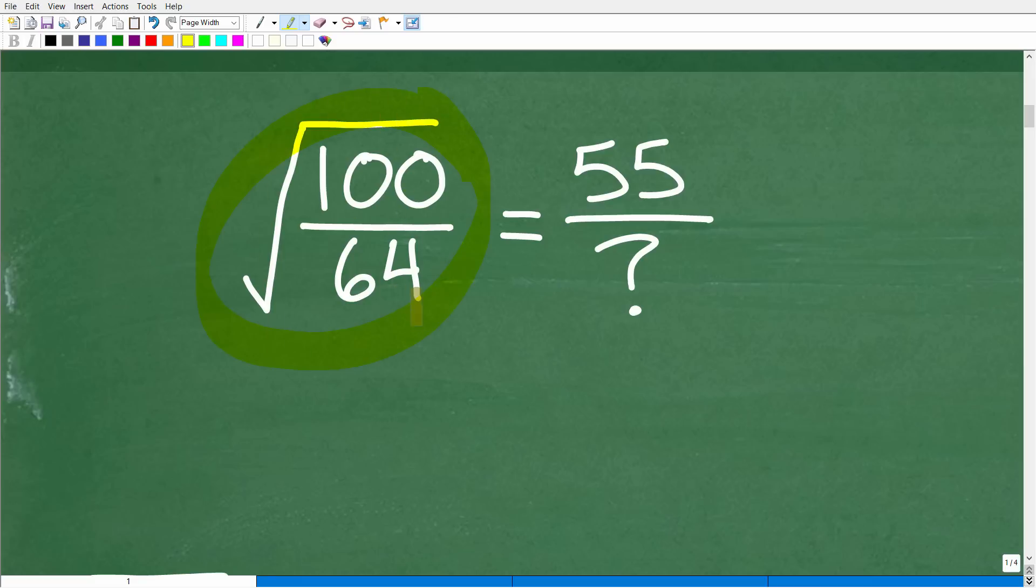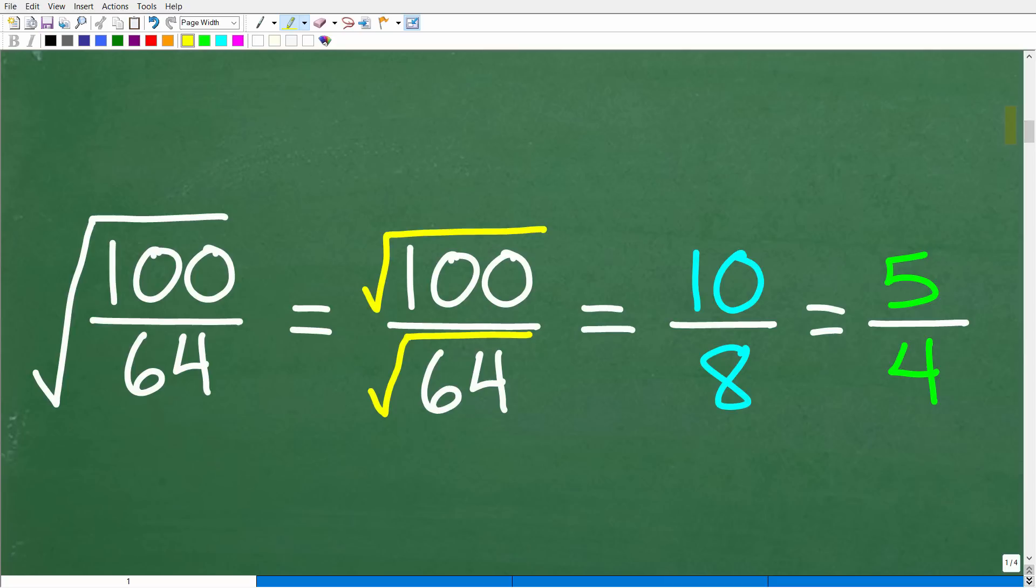We have the square root of 100 over 64. And some of you might be thinking to yourself, well, I know what the square root of 100 is by itself, and I know what the square root of 64 is by itself, right? But we have this big square root. So I'm going to go ahead and address this right here because this is going to make our problem easier. Well, the square root of a fraction. Notice here we have one big square root symbol of 100 over 64.